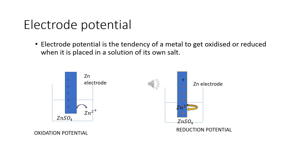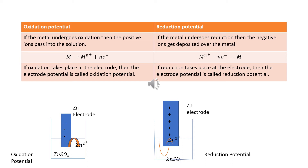The next topic is electrode potential. Potential means a tendency, capacity, or capability of that electrode. So the electrode potential is the tendency of a metal to get oxidized or reduced when it is placed in a solution of its own salt. For example, if we dip a zinc electrode in zinc sulfate solution, a potential difference develops at the zinc electrode and its electrolyte — that is the zinc sulfate interface — as the metal ions in the solution tend to leave the electrolyte and deposit on the electrode. Electrode potential can be classified into two types: oxidation potential and reduction potential.